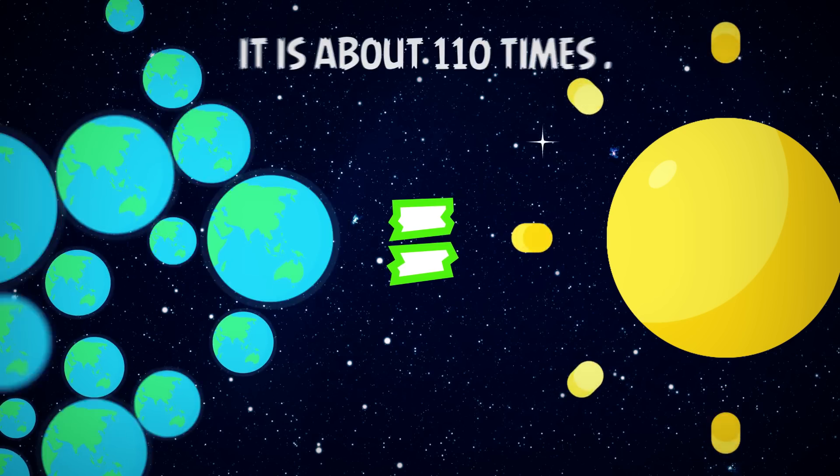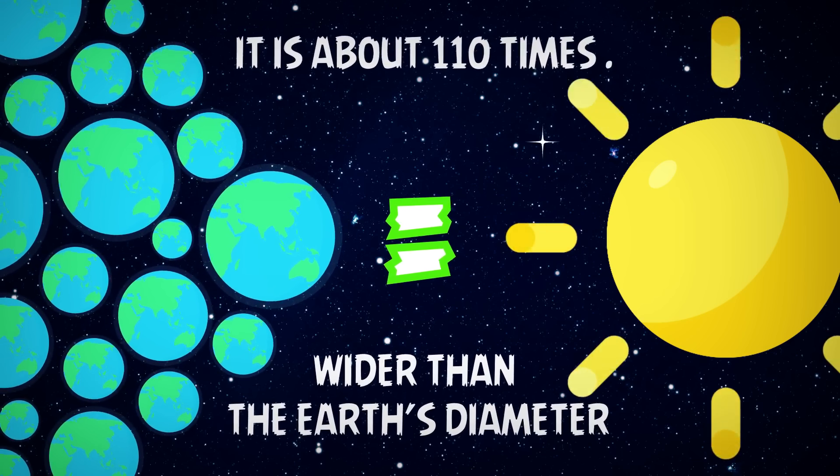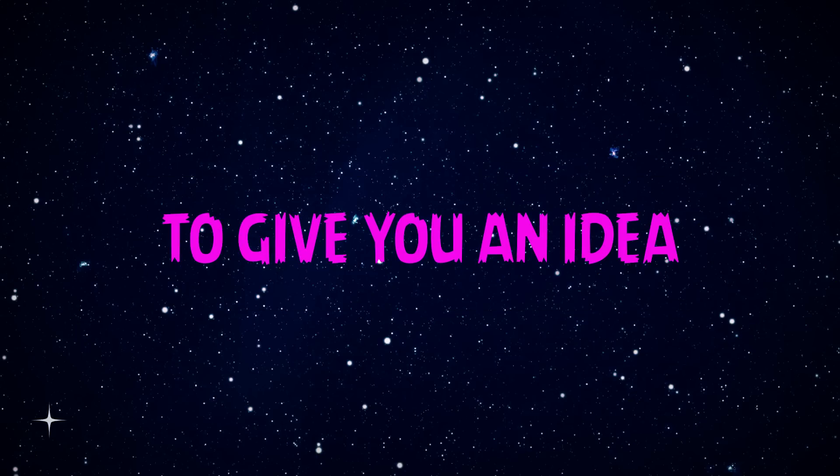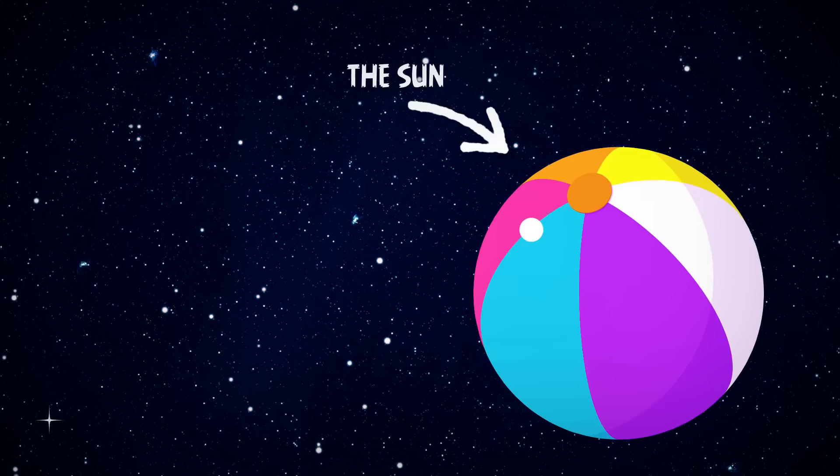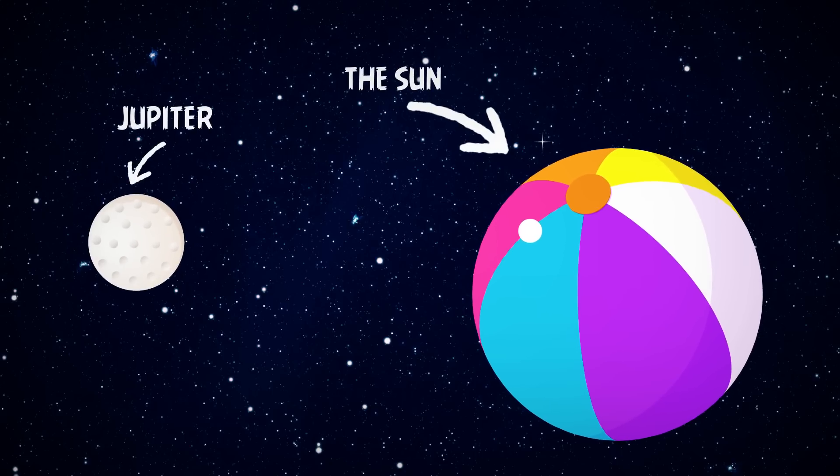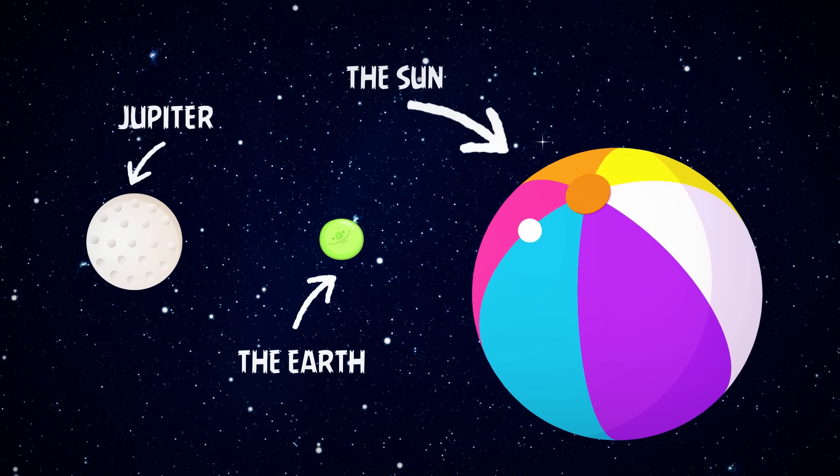And it's about 110 times wider than earth's diameter. To give you an idea, if the sun were the size of a beach ball, then Jupiter will be the size of a golf ball, and earth will be as small as a pea.